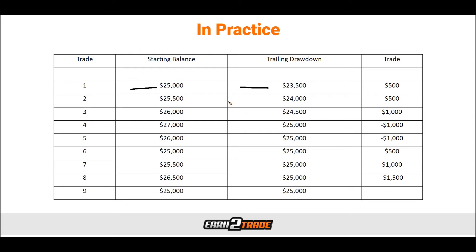In our example here, after the first trade, the account balance increased $500 to $25,500. A trailing drawdown will also increase — in this case to $24,000, rising $500. The second trade is profitable, increasing the account balance to $26,000, and the trailing drawdown has now increased to $24,500. The third trade is a profit of say $1,000, bringing us to $27,000. But the trailing drawdown only increases by $500 to $25,000, because that is the initial starting balance. This illustrates exactly how a trailing drawdown can continue to rise up until a limit, just like we have at Earn2Trade.